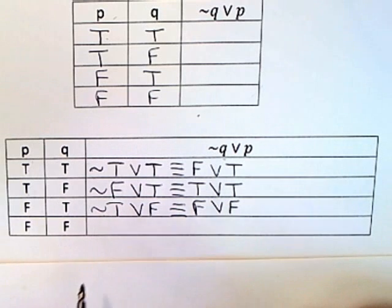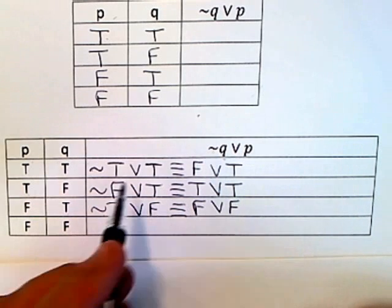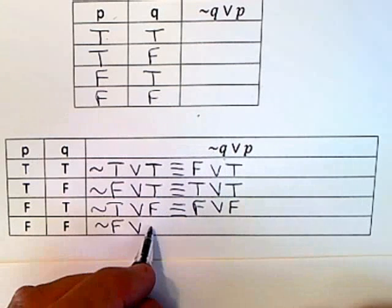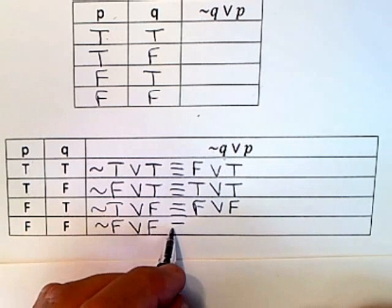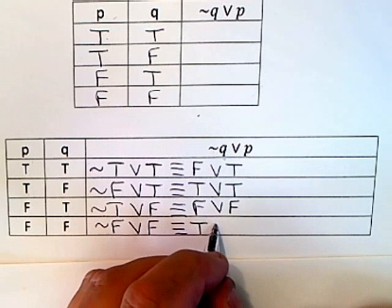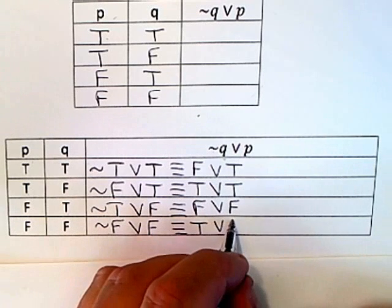And I'm on the last line now. They're both false so I get not false or false. And as we've said several times now, not false is true, so I get true or false.